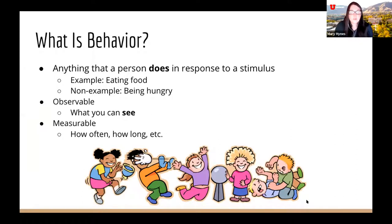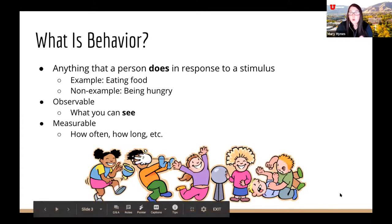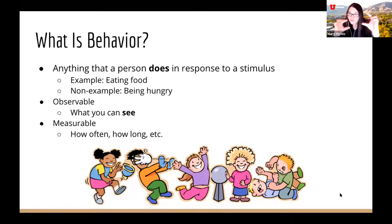Behaviors also need to be observable — you need to be able to see it or hear it occurring. Behaviors are also measurable in lots of different ways. You can measure through frequency, how often it occurs; through duration, how long it occurs; and through intensity. For example, if screaming is a behavior, you can count how often a child screams in a single class period, record how long they scream, or record the intensity — like the number of decibels.